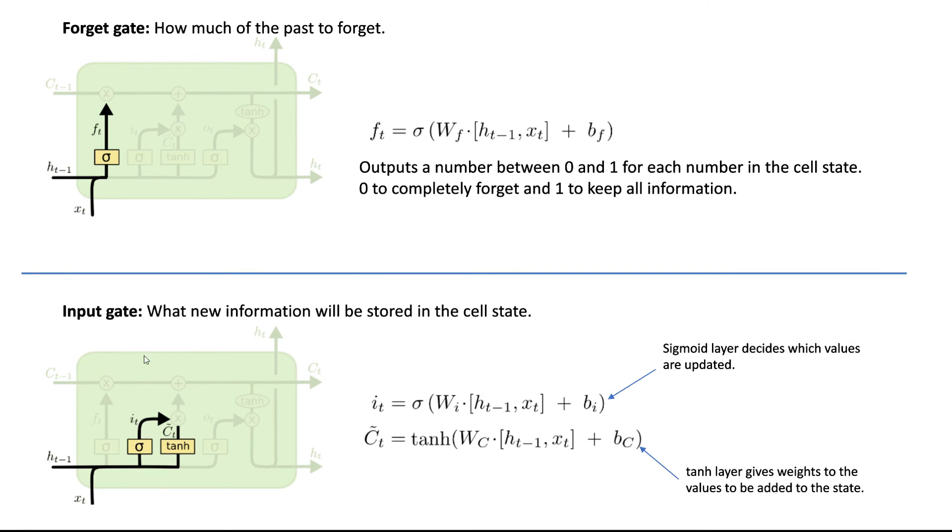And the next is the input gate down here. What new information will be stored in the cell state because there is information coming in. What new information will be stored in that cell state? Here we have a sigmoid and we have a tanh. The sigmoid layer decides which values are updated and the tanh layers are deciding the weight of each of these values, the importance of each of these values.